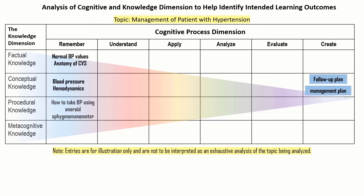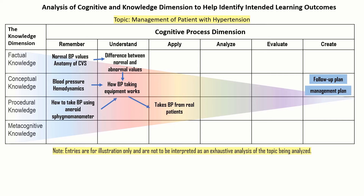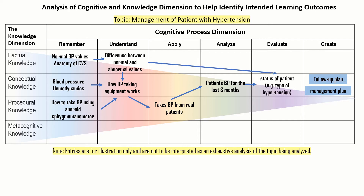Students should not only remember these things — they should understand them to the point that they can differentiate between normal and abnormal, and explain how blood pressure-taking equipment works based on their knowledge of hemodynamics. They then Apply this by taking actual BP from patients. From the data collected, they Analyze the patient's blood pressure history over three months, Evaluate the status of the patient — identifying the type of hypertension — and based on that, Create a follow-up or management plan.